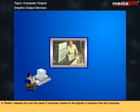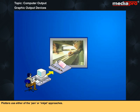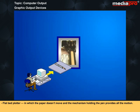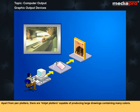A plotter releases ink over the paper it traverses based on the signals it receives from the computer. Plotters use either of the pen or inkjet approaches. Pen plotters generally come in two kinds: drum plotters, in which a paper is placed over a drum that rotates back and forth to produce an up and down motion while the pen plots; and flat bed plotters, in which the paper doesn't move and the mechanism holding the pen provides all the motion. Apart from pen plotters, there are inkjet plotters, capable of producing large drawings containing many colors.